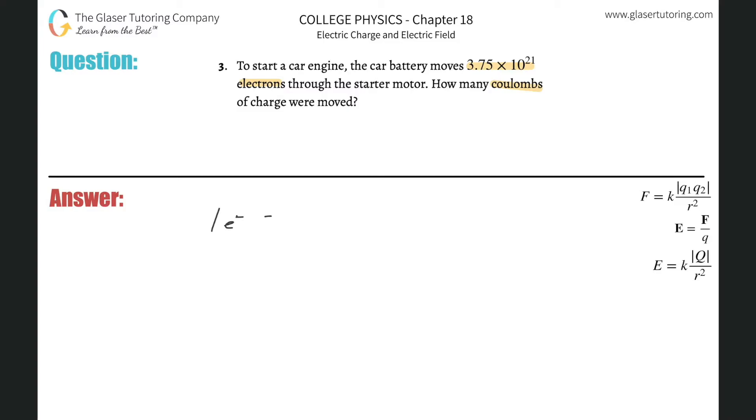electron contains negative 1.6 times 10 to the negative 19 coulombs of charge. So when you're calculating how many electrons, you don't necessarily have to worry about the negative sign here. We just need the magnitude. The negative sign just represents the sign of the electron.